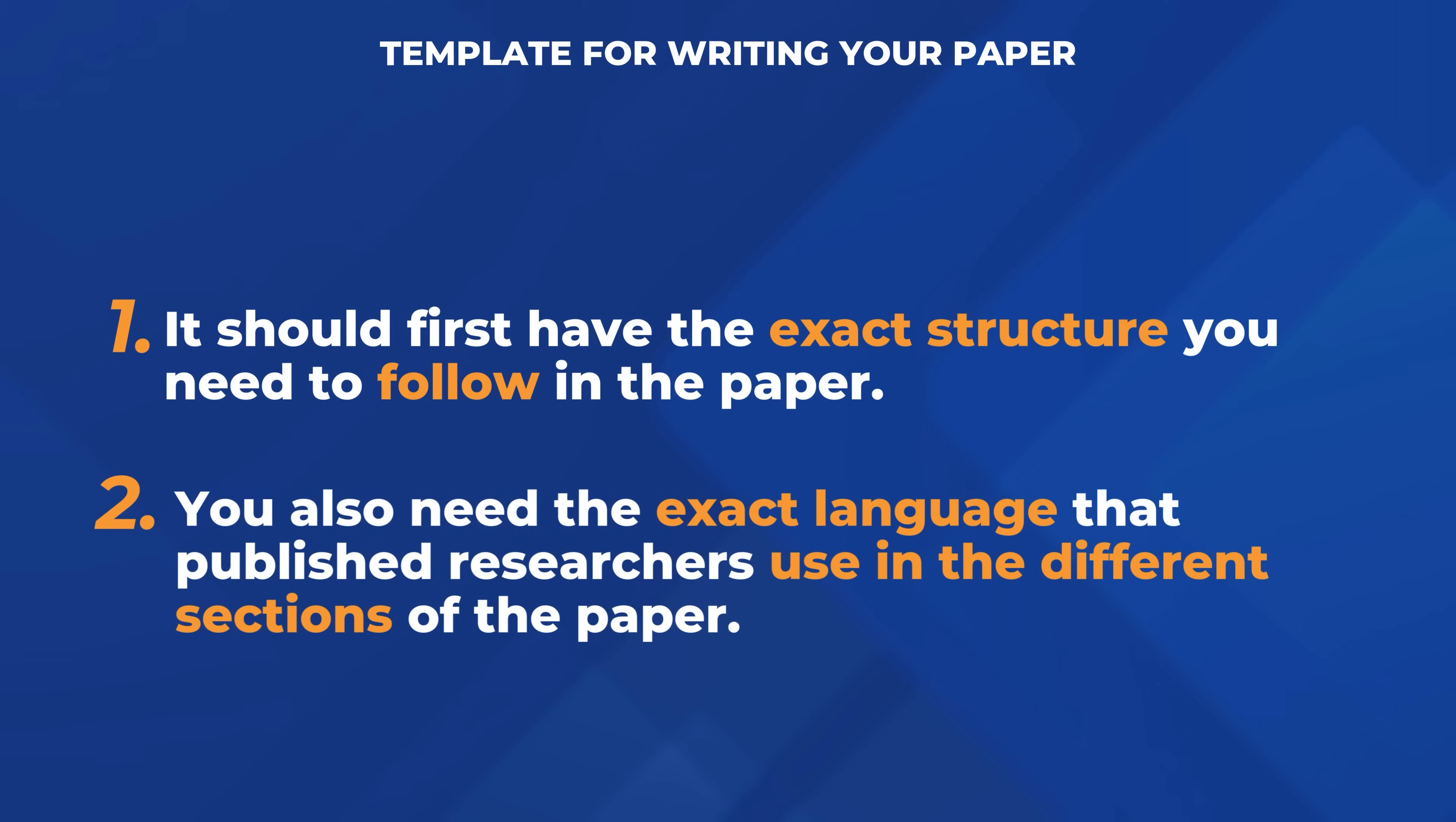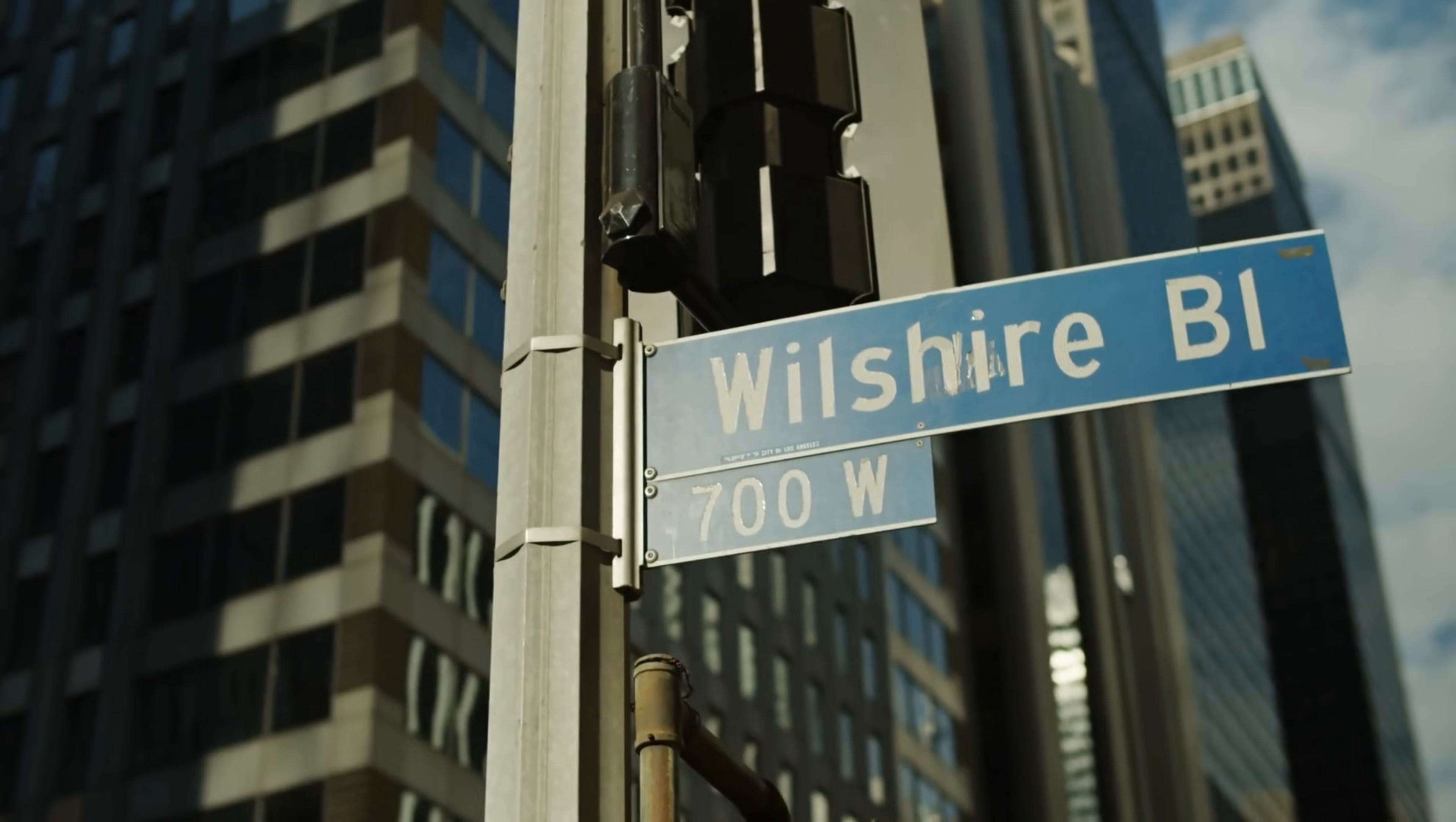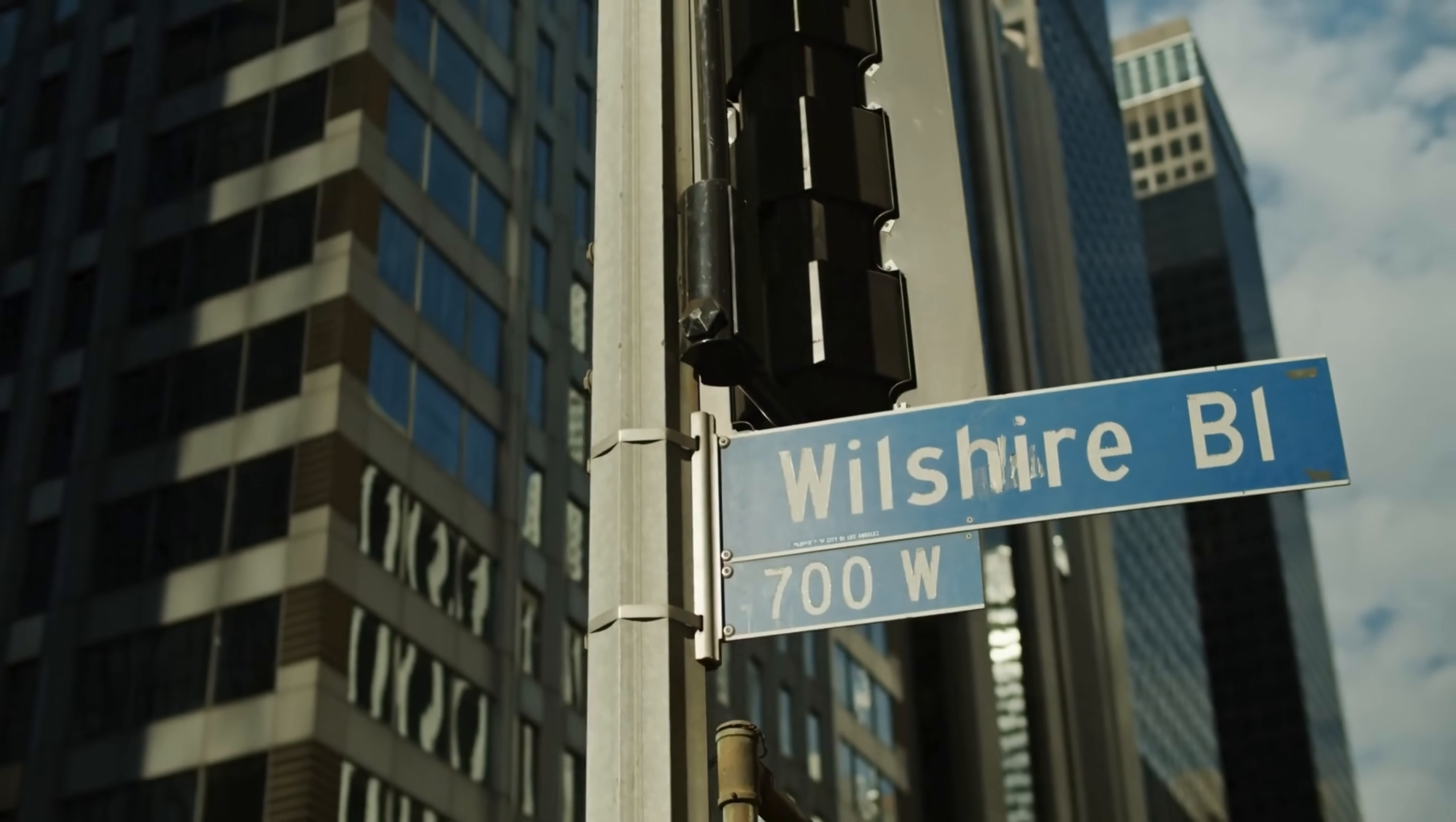Second, you also need the exact language that published researchers use in the different sections of the paper. This is like the names of the streets and the names of the landmarks in that place that you're going to. Once you have both, writing a paper really feels like cheating. So how do you create such a proven template?